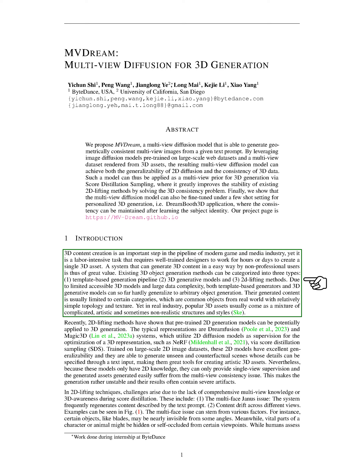There are three main types of 3D object generation methods currently in use: template-based generation, 3D generative models, and 2D lifting methods. However, due to the limited availability of 3D models and the complexity of the data, the first two methods struggle to create a wide variety of objects. They tend to produce content that falls within certain categories, typically simple, real-world objects.